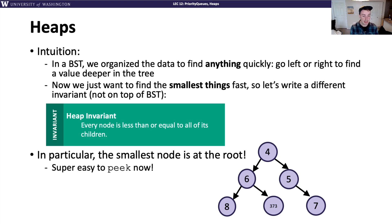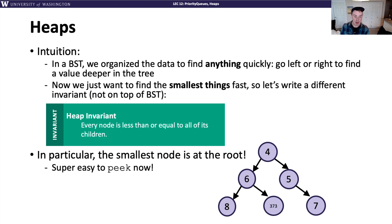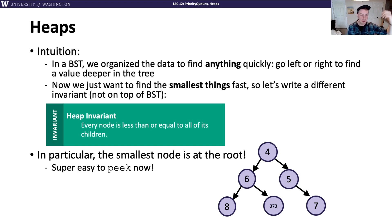Here's an example of a tree that follows the heap invariant. Every node is less than or equal to all of its children. For example, 4 is less than both its children 6 and 5. The children of 6 are 8 and 373, which are greater than 6. The reason this heap invariant is useful is that the smallest value must be the root node by definition. Since we store our tree with a reference to the root, you always have instant access to it — making peek super easy.